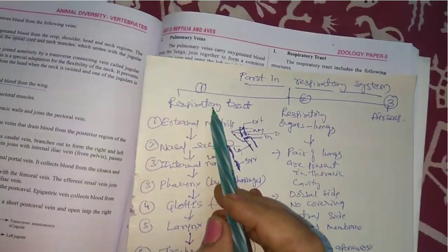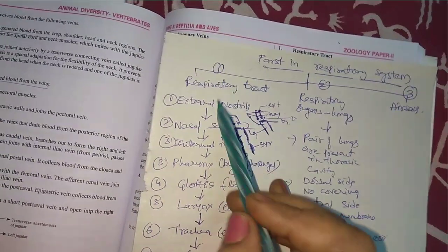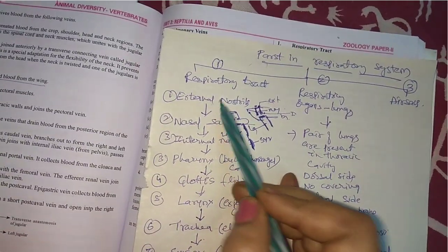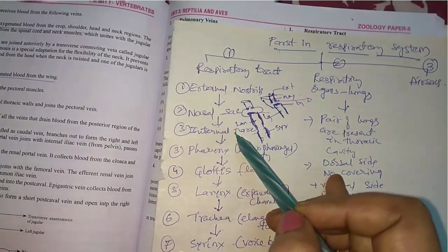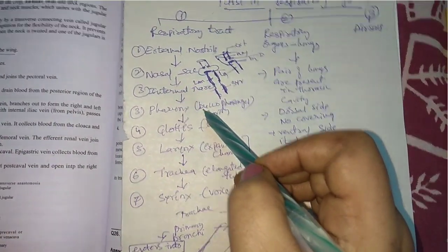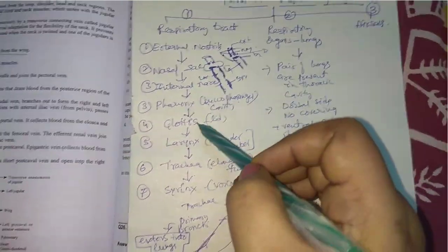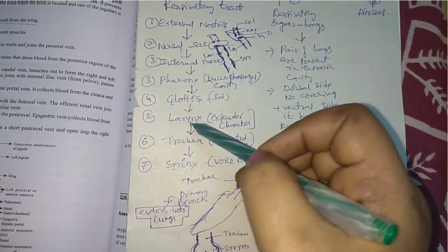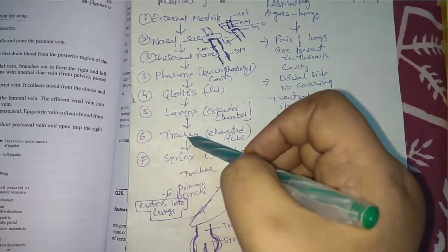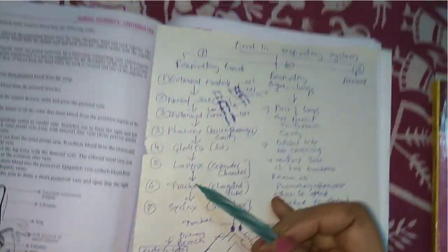What are the parts present in the respiratory tract? The external nostrils, nasal sacs, internal nares, pharynx — also known as the bucopharyngeal cavity — and larynx, trachea, and syrinx.